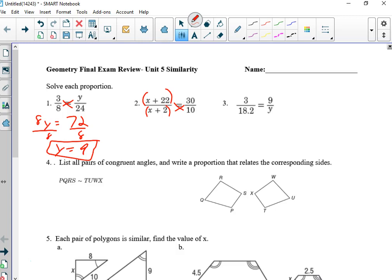So here, remember, when you're multiplying, distribute to both terms. You got 10x plus 220 equals 30x plus 60. At this point, I'm going to move my x's to the right. I'm going to subtract 10x. I'm going to subtract 60 from both sides and get 160. And now when I divide by 20 from both sides, I get x and 8.